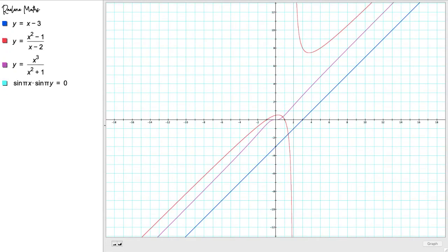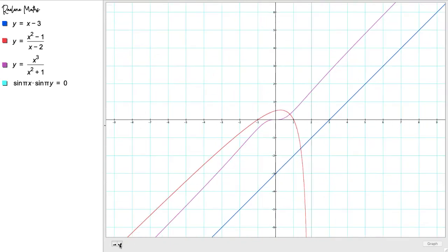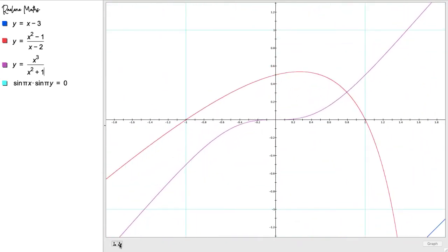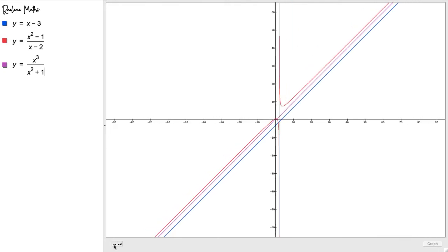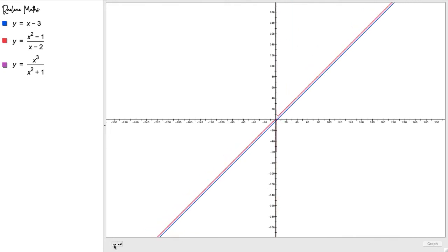There are three new graphs, still with a linear behavior, but not when we zoom in. These graphs are not locally linear. Rather, when we zoom out, we see that the three graphs start to look like the same line, a slant asymptote.